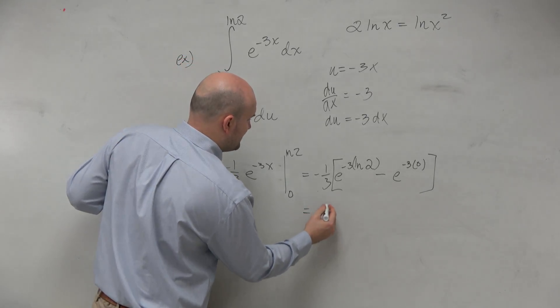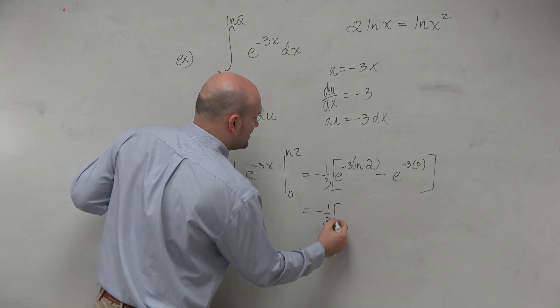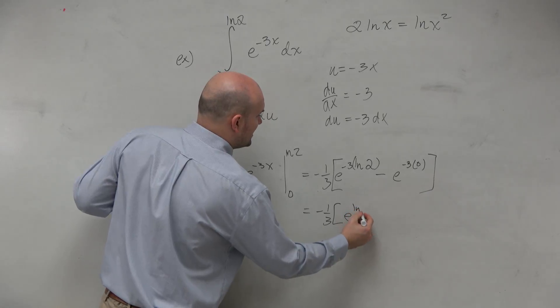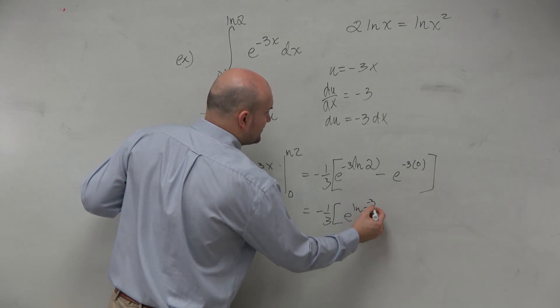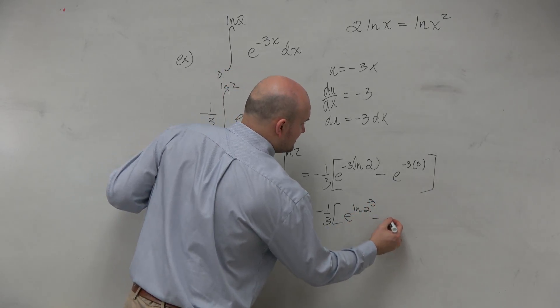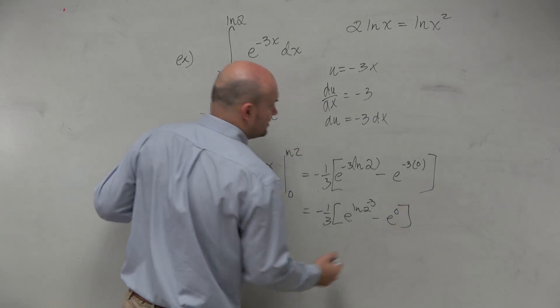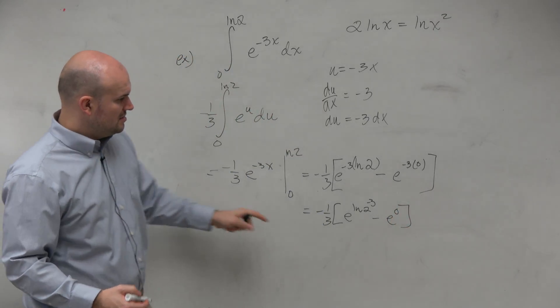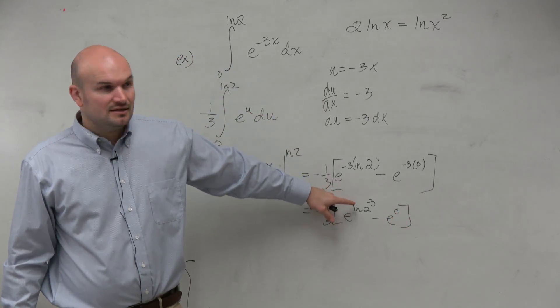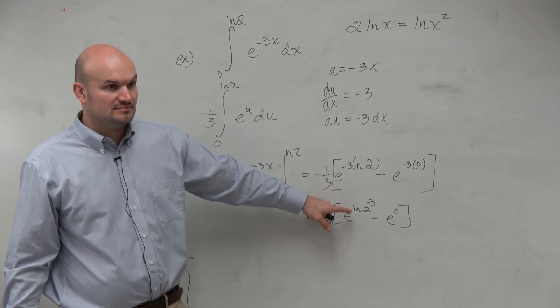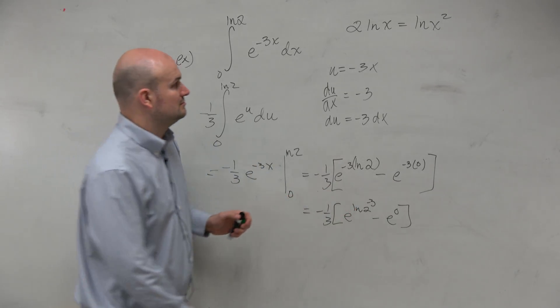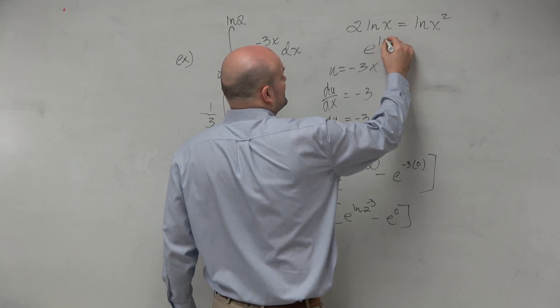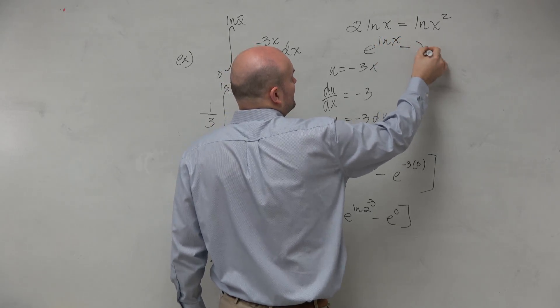That's helpful. So I have negative 1/3. And then I could rewrite this as e to the ln of 2 to the negative 3rd minus e to the 0, because negative 3 times 0 is that. So guys, what's e to the ln of anything? Well, e to the ln of x is just x.